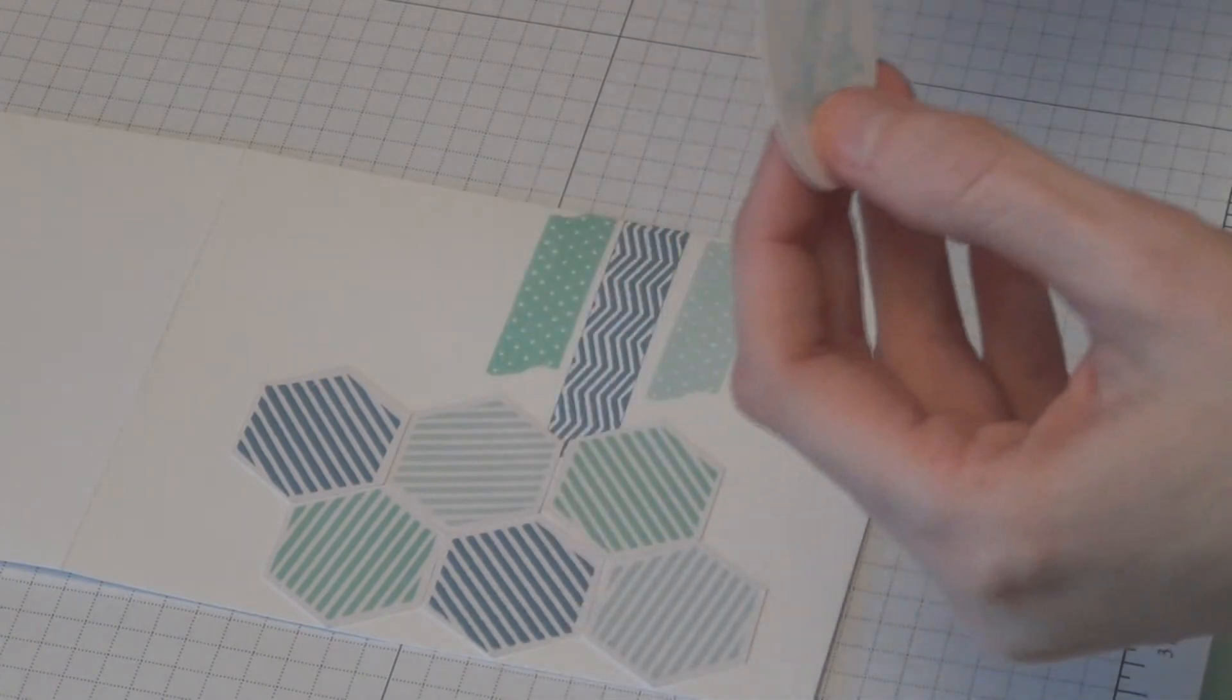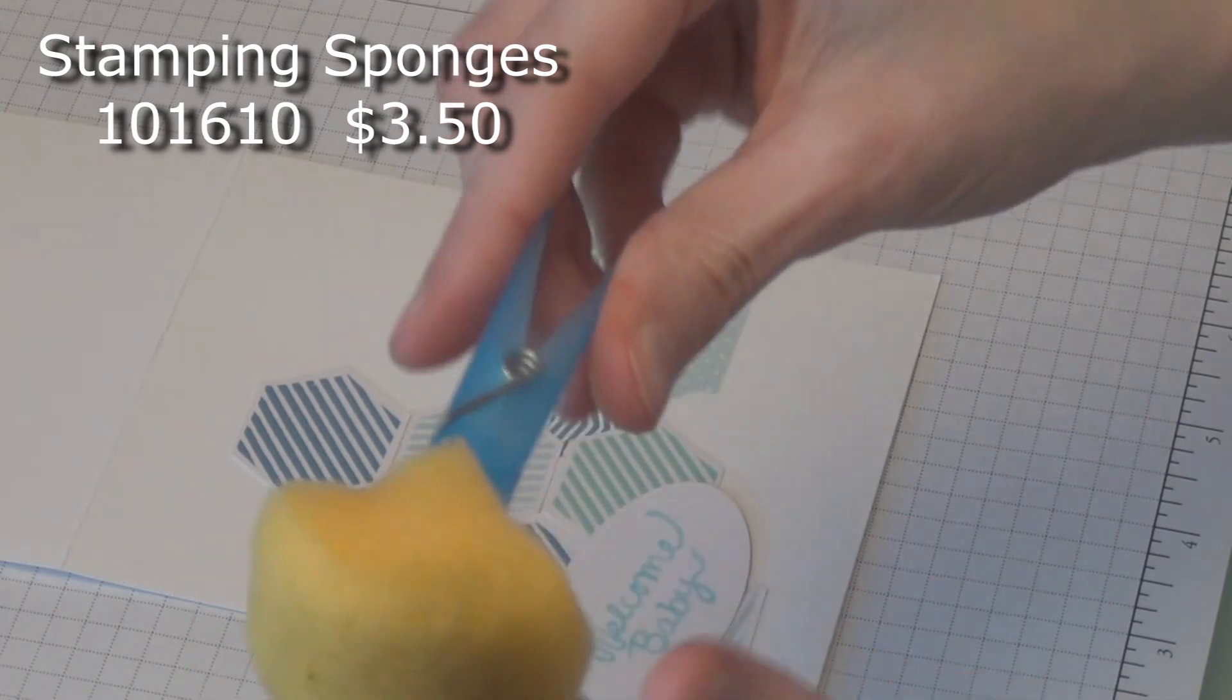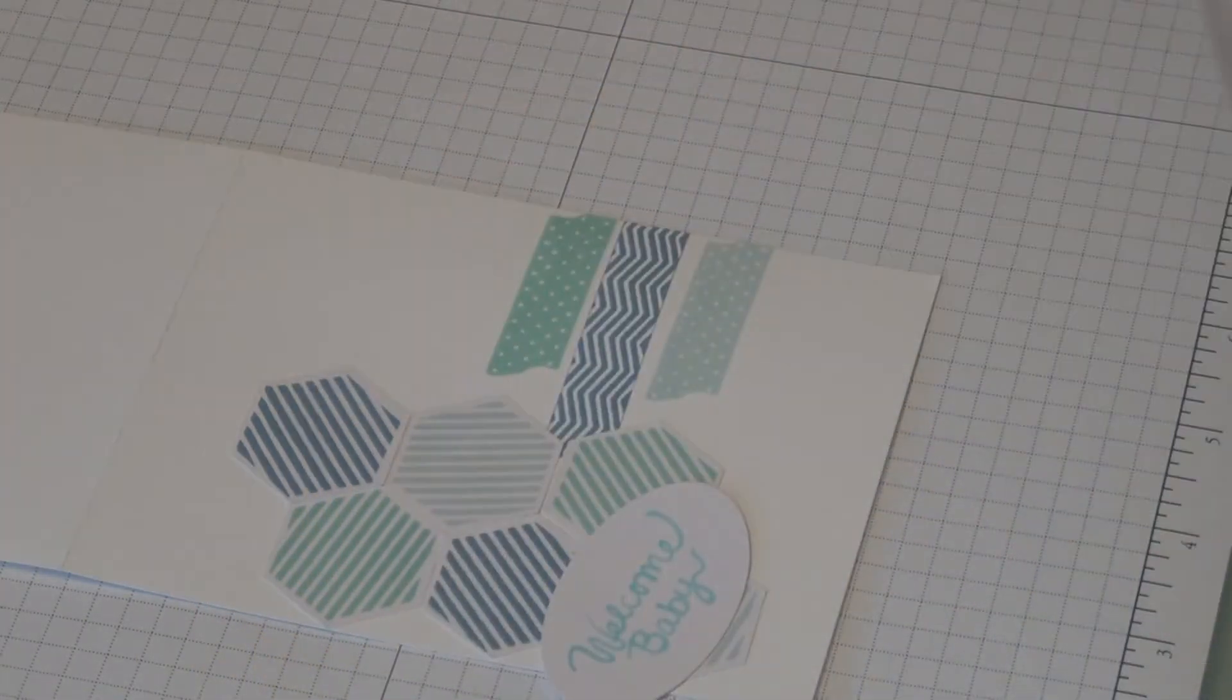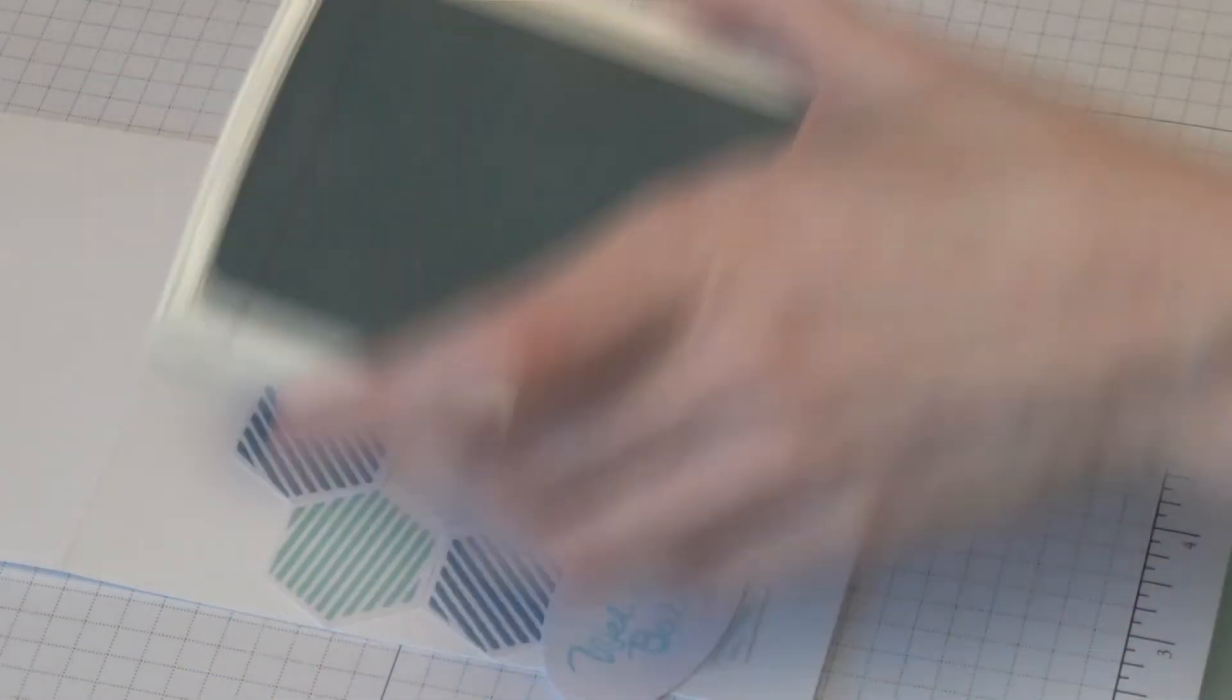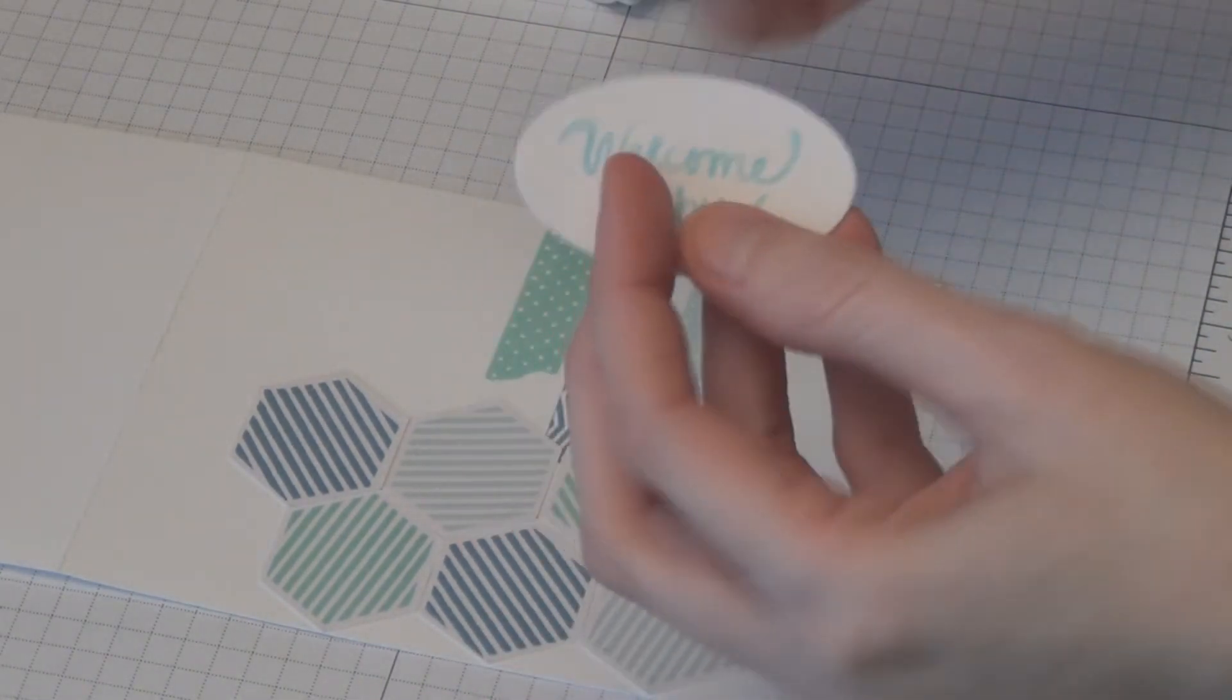Best laid plans, huh? I am now going to take a stampin' sponge that I have cut into fourths. Bringing back in my Soft Sky. I am just going to sponge around the edges of this.